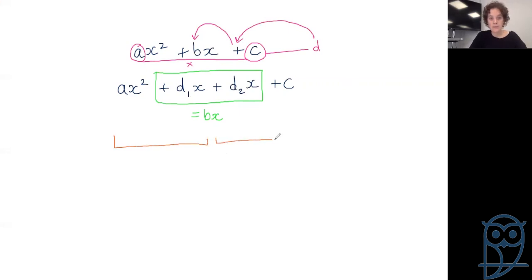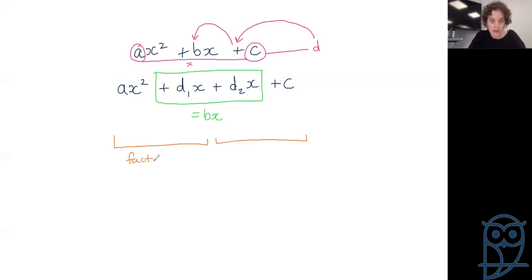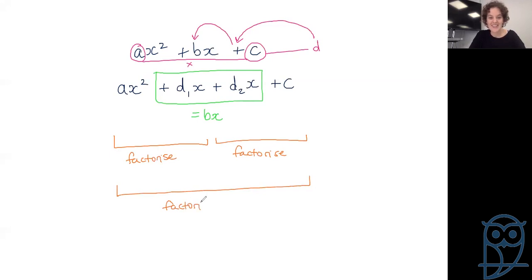We factorize the first pair and the second pair separately. Then we see the magic — both pairs share a common bracket, which enables us to factorize again into two brackets. Let's see this in action.